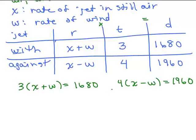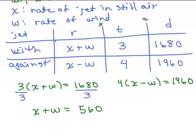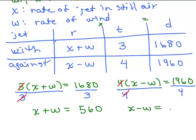You can do the distributive property, but then your coefficients for X will be 3 and 4, and for W will be 3 and negative 4, so you'll have to do more work using the addition method. My suggestion is to divide both sides by the coefficient of 3 on the first equation, so the 3's cancel and I have X plus W equals 560. And for the second equation, divide both sides by 4 so the 4's cancel out, giving us simpler equations.